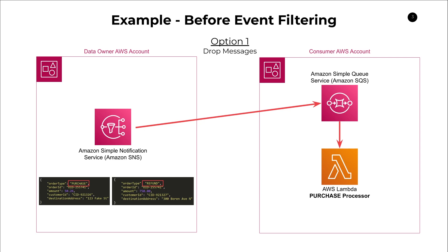This brings us to option one: dropping messages. This is the way we used to handle it before better options existed. Basically in the first line of the Lambda function, you would check: is the event type a purchase? If yes, proceed. If it's any other type — in this case, refund — ignore the message and just return. If you have an event composition of say 80% purchases and 20% refunds, you're going to be invoking your function 20% of the time as a no-op. You're basically burning money, because Lambda functions cost money based on the number of invocations. This was the only way to control event flow for a long long time.